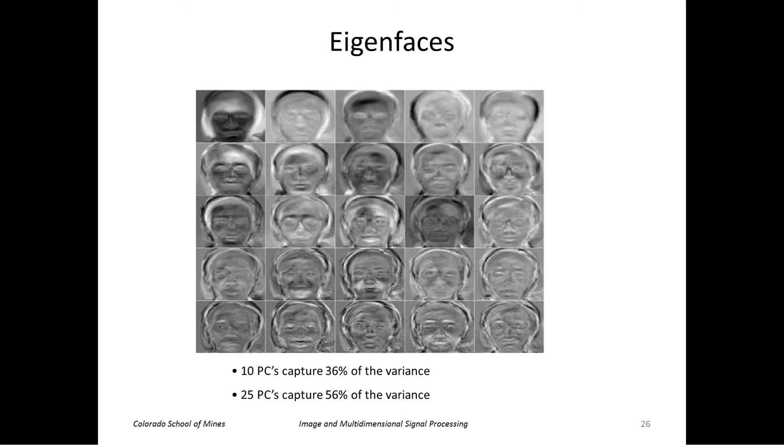So we perform the PCA on that collection of face images and we produce eigenimages, or in this case we call them eigenfaces. So here are the first set of the most important or largest variation eigenimages. Basically we would represent any face now as the mean plus some linear combination of these eigenfaces. And as you can see, with only 25 principal components, the ones we've shown here, we capture 56 percent of the variance in our data set.